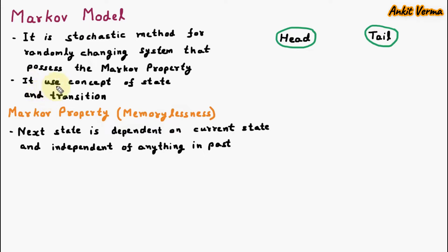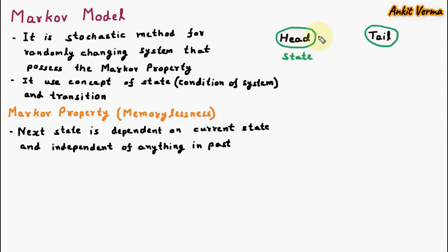The next thing is that the Markov Model uses the concept of State and Transition. To understand this we are taking the help of a diagram. Here we are having the two sides of a coin — one is head, another is tail. So these are the states. We can say that head is state 1 and tail is state 2. States are the condition of a system. Now suppose we are on state 1 which is head, and when we toss the coin there is a possibility that we can go to tail — means we are moving from state 1 to state 2. This is called Transition.